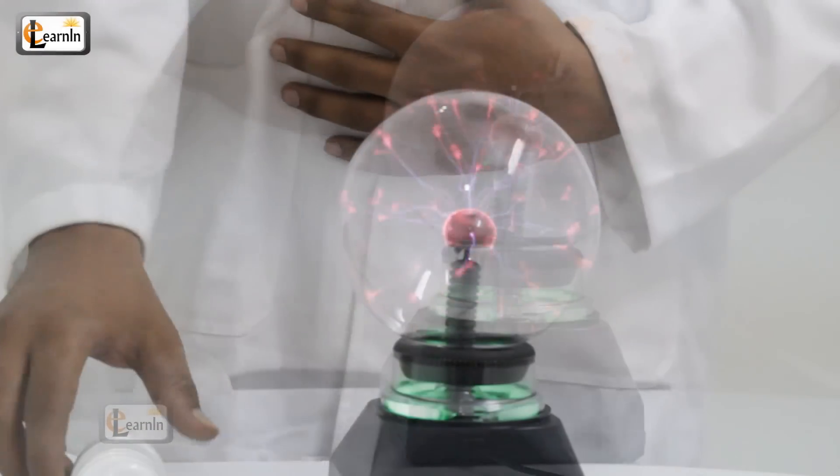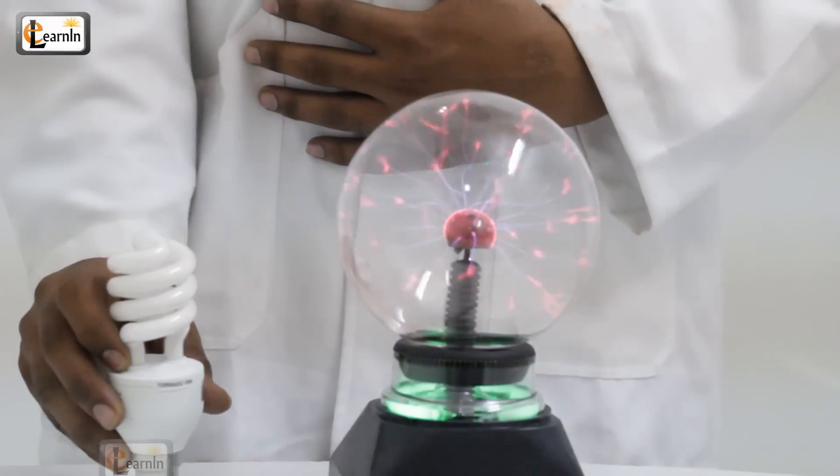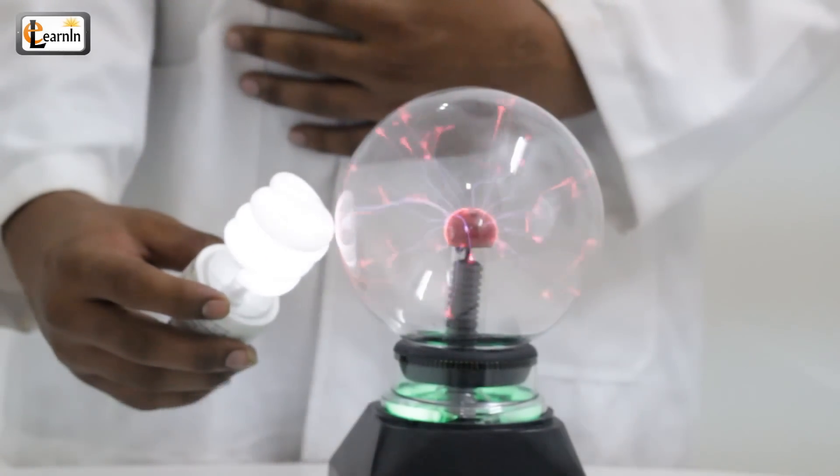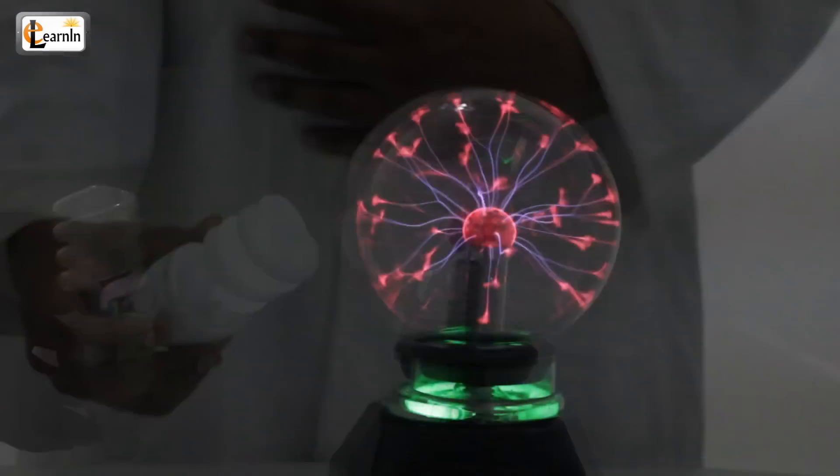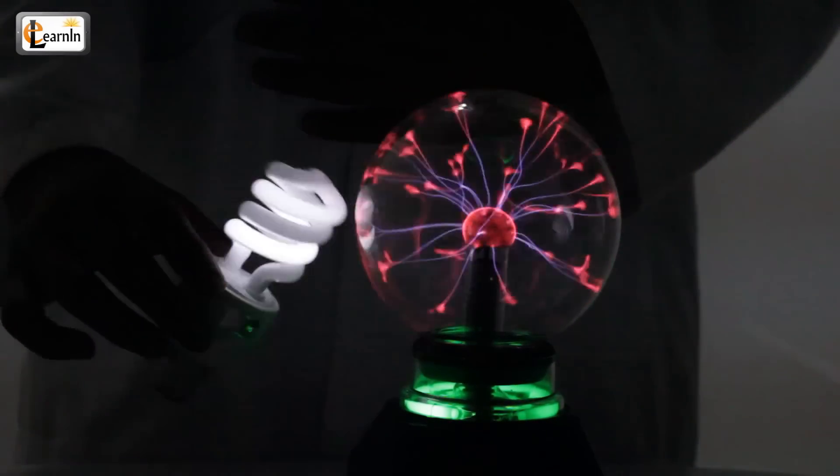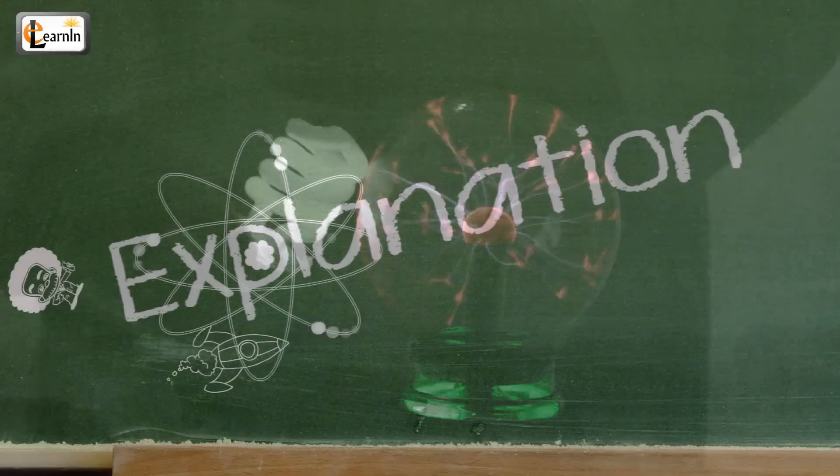Take a fluorescent lamp and bring it near the glowing plasma light. Now observe what happens. Notice that as the fluorescent bulb is brought nearer to the plasma lamp, it glows.